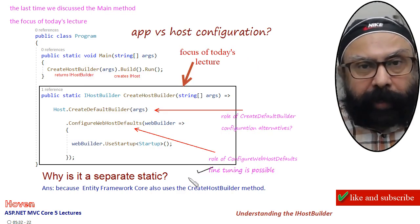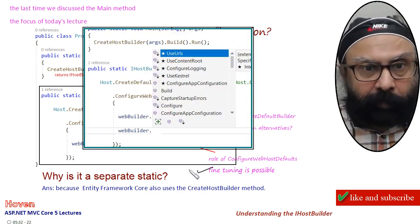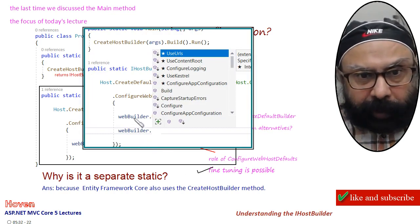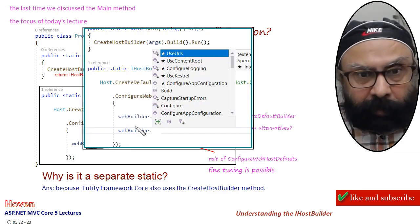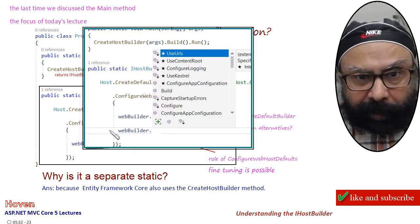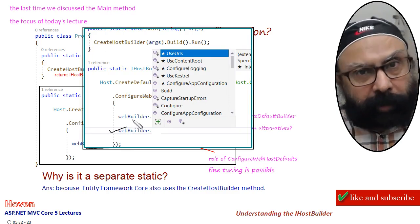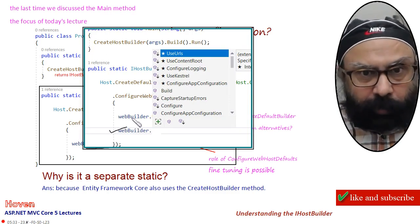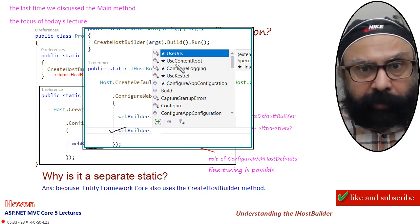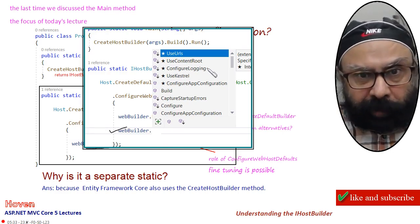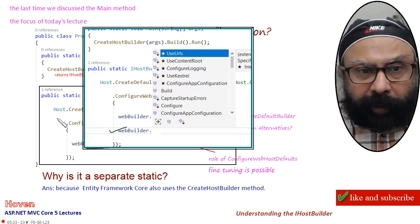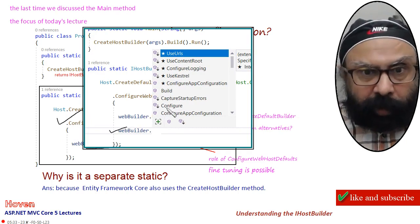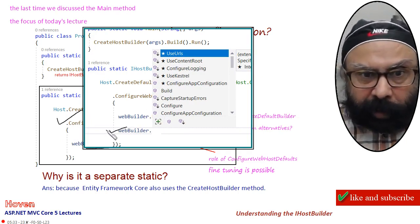Fine tuning is possible, and how that can be done: this webBuilder that is available here — you can add an additional line, or put a dot there in the previous line of code, to chain these methods: useUrls, useContentRoot, configureLogging, useKestrel, and all that. What was being done automatically here by predefined code can be tuned here also.